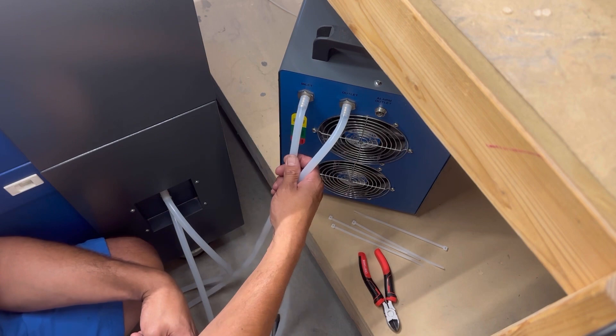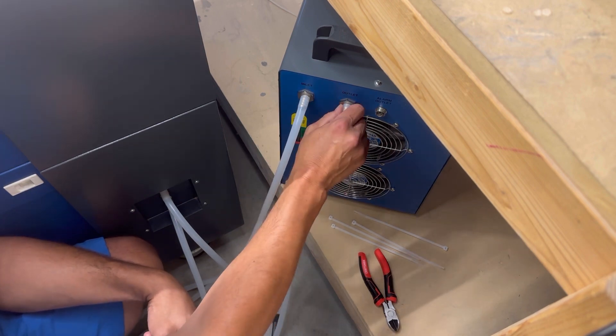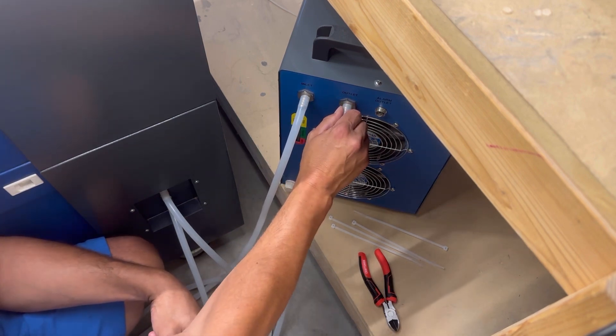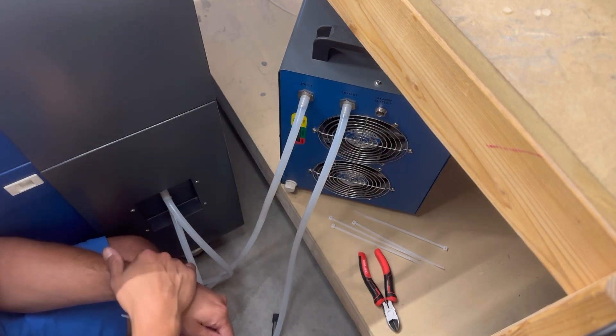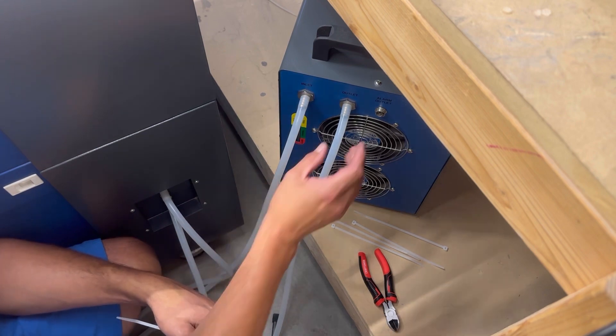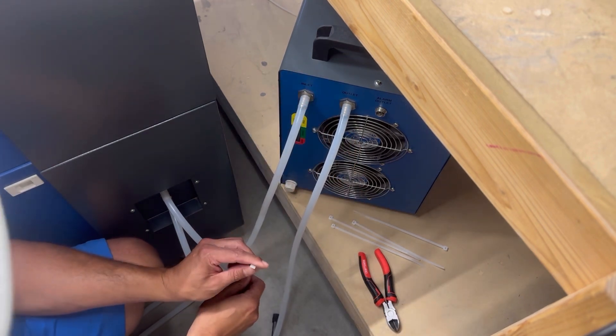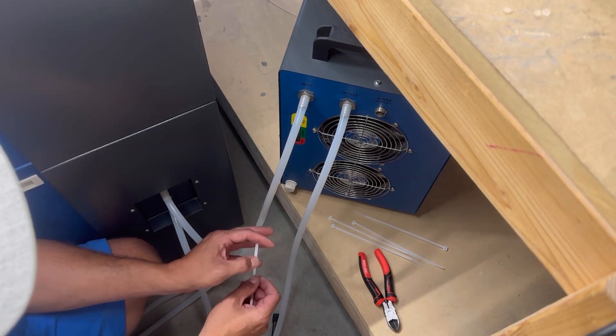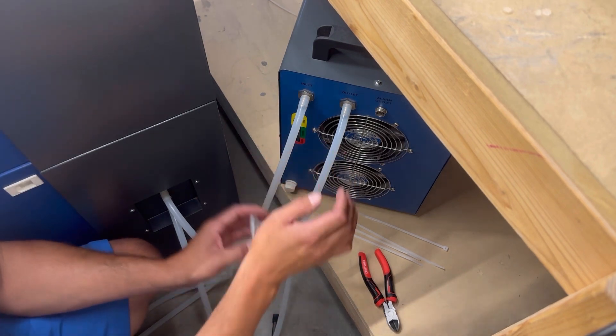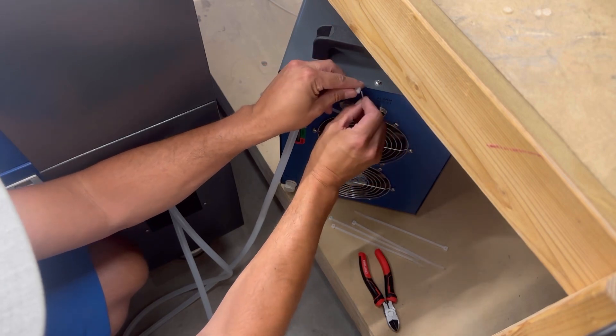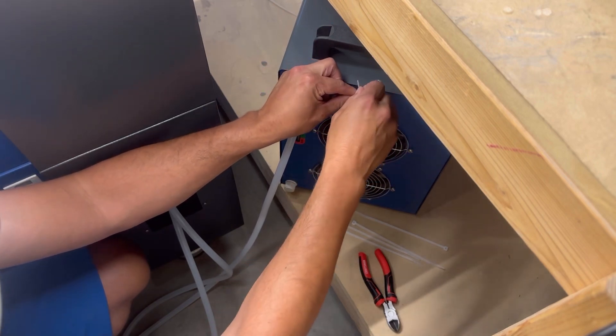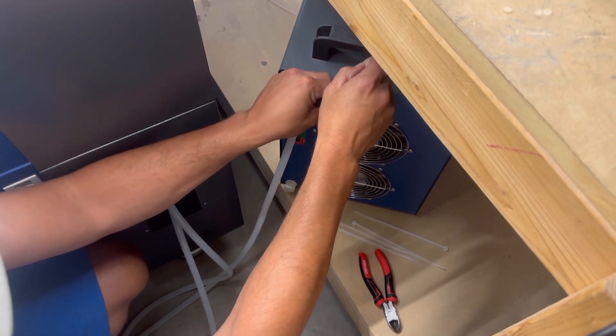So now that we got our hoses hooked up correctly, we need to secure these hoses to the outlet ports of the chiller and also the laser. This is a classic example of do as I say, not as I do. I went to my local store and they didn't have any hose clamps the size I needed. So today, since I need to get some projects done for pickup tonight, I'm gonna zip tie them. It's better to have hose clamps that you could tighten down, but this is all we got for now.